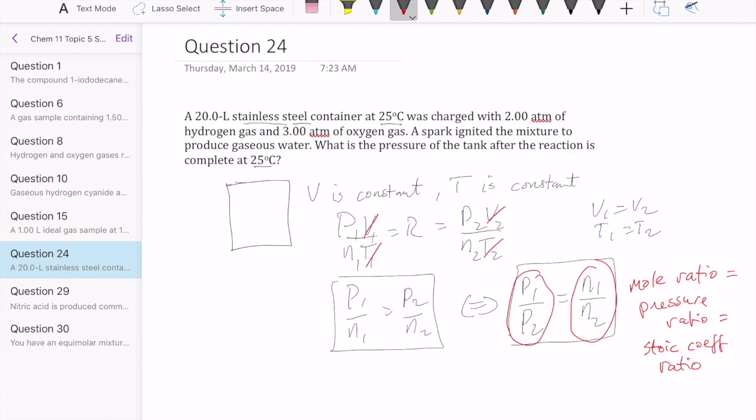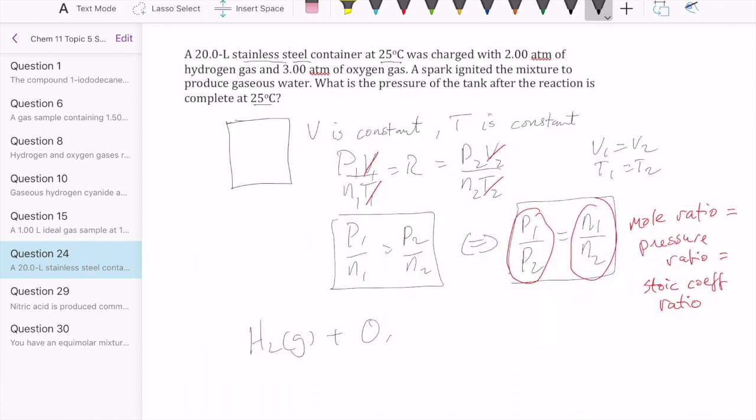So let's write out the reaction: hydrogen gas, oxygen gas, and water produced. We balance this reaction out, we get that. So you can say that two moles of H2 reacts with one mole of oxygen producing two moles of H2O. Or you can also say two atm of H2 reacts with one atm of O2 to produce two atm of H2O.